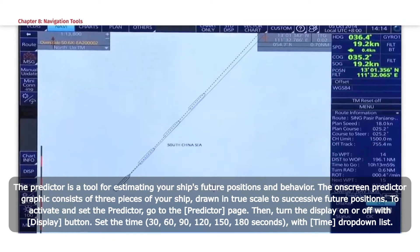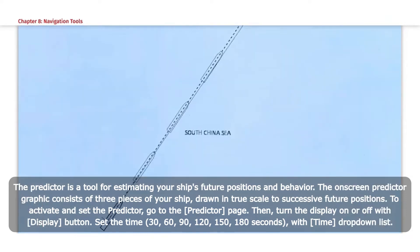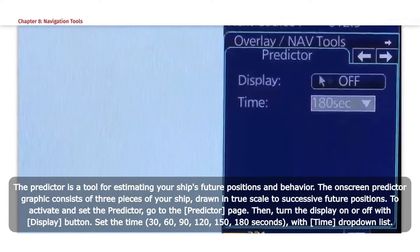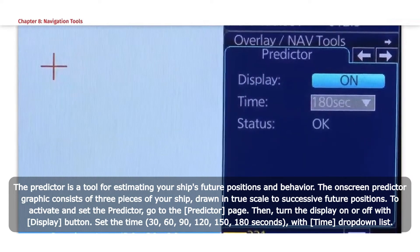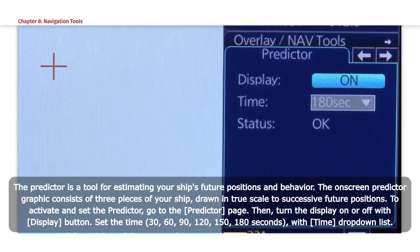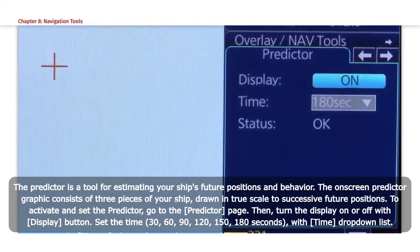The Predictor is a tool for estimating your ship's future positions and behavior. The on-screen Predictor graphic consists of three pieces of your ship drawn in true scale to successive future positions. To activate and set the Predictor, go to the Predictor page, then turn the display on or off with the Display button. Set the time to 30, 60, 90, 120, 150, or 180 seconds with the Time drop-down list.